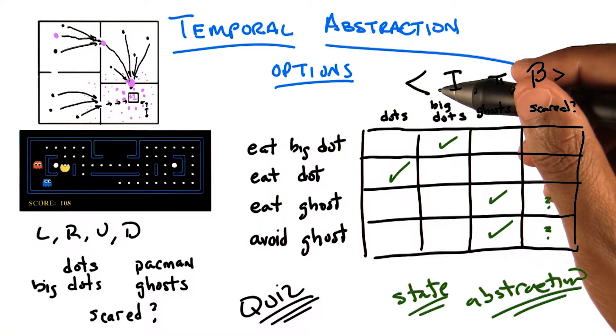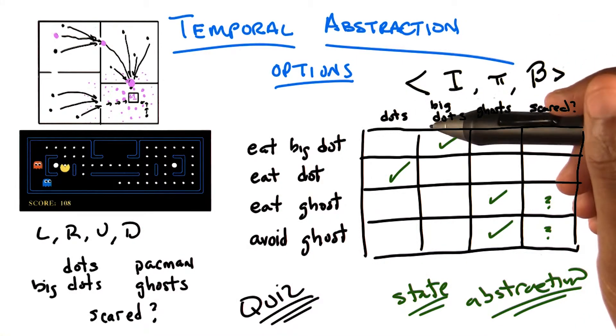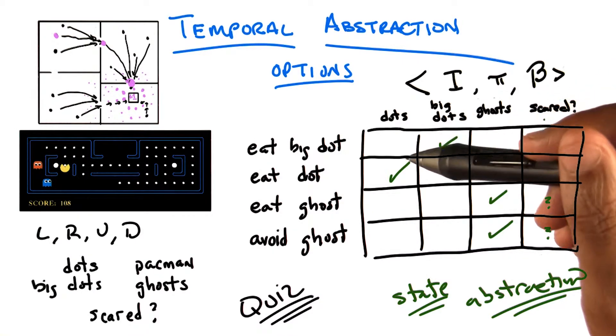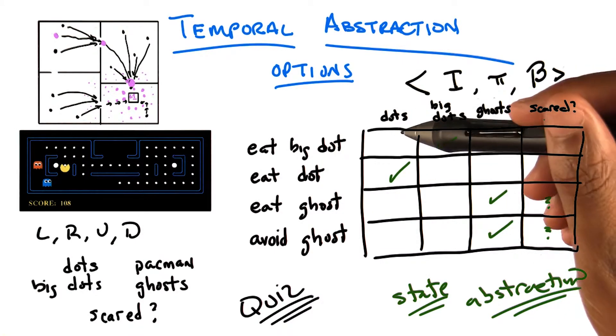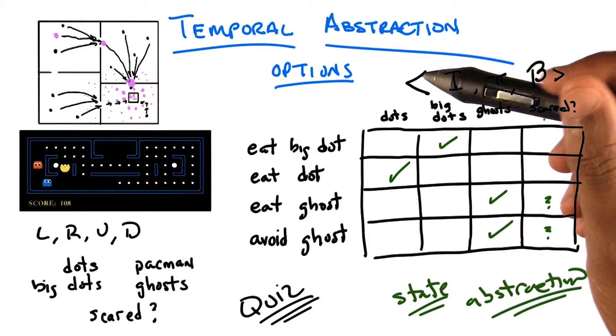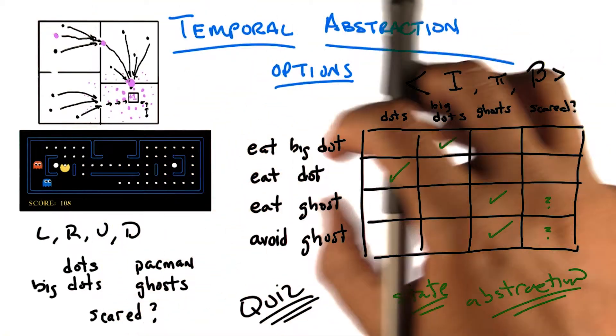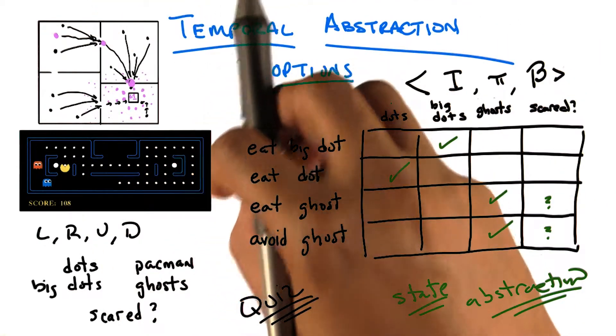Then you can solve the problems more efficiently. Right. In the very beginning, we said the thing that made reinforcement learning hard is that as the number of states grew, the problem became more and more difficult. It was sort of super linear in the number of states. So if I can avoid whole features of the states, that is, I can collapse states that are otherwise different as if they were a single state.